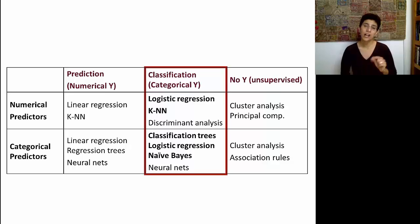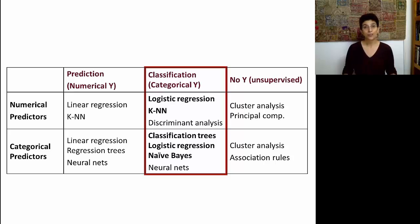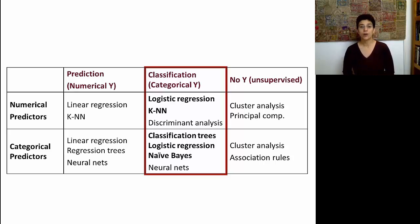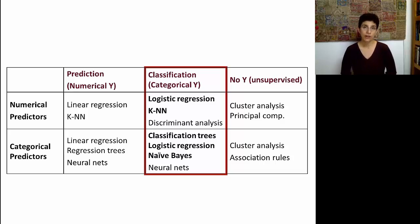Logistic regression is a cousin of linear regression and will work whether your predictors are numerical, categorical, or mixed. We'll also look at the very neat technique called naive Bayes. There's another technique described in the book called neural nets, which we won't cover in this course, but it is very useful for categorical predictors.